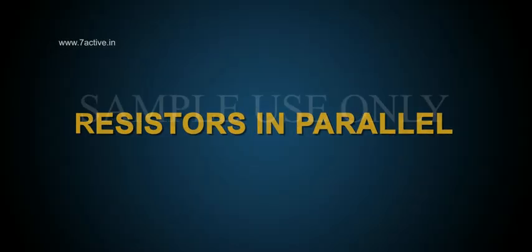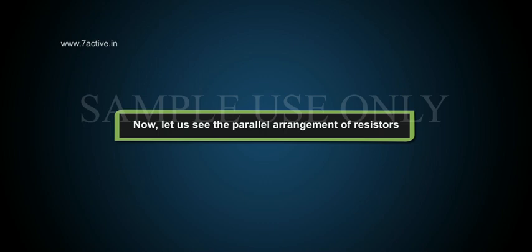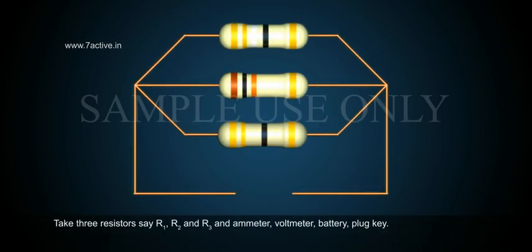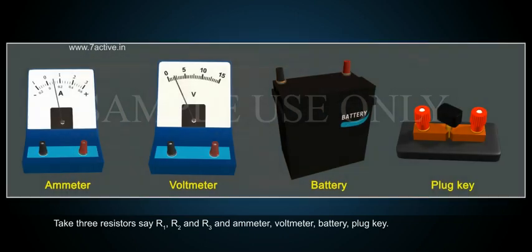Resistors in parallel. Now let us see the parallel arrangement of resistors. Take three resistors: R1, R2, and R3, and an ammeter, voltmeter, battery, and plug key.